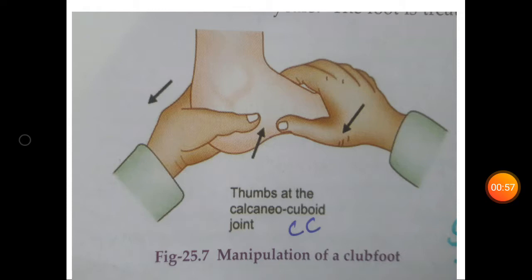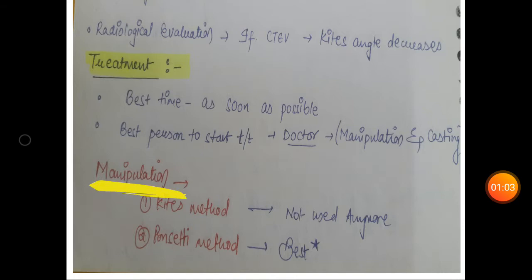Important to know: the thumbs are at the calcaneo-cuboid joint. There are two methods given for manipulation: Kites method and Ponseti method. Kite method is not used anymore, and Ponseti method is the best and still used.